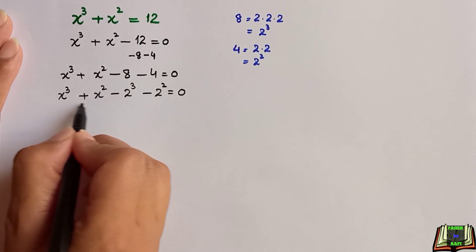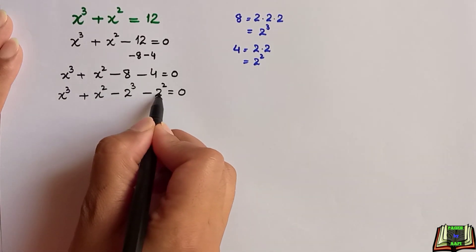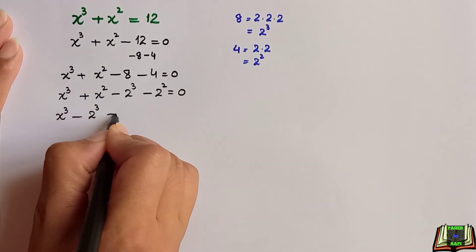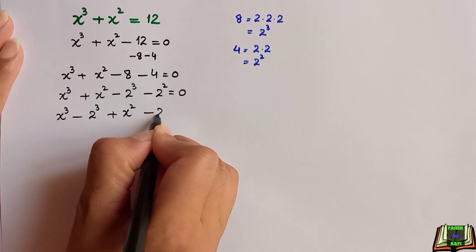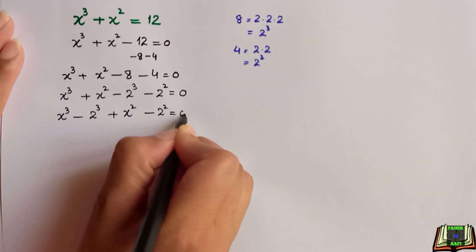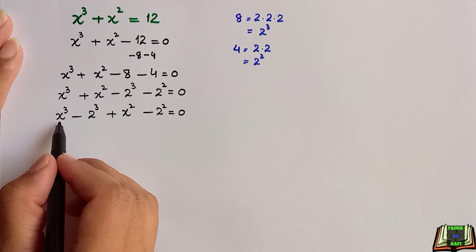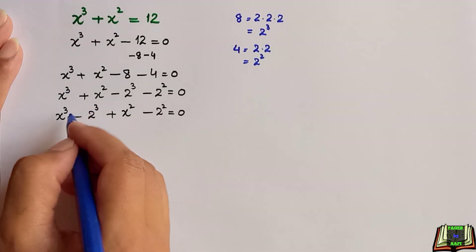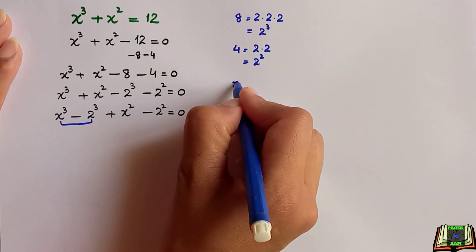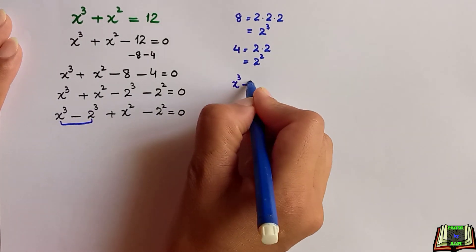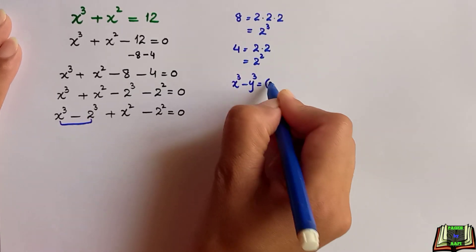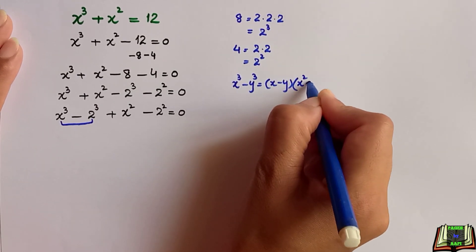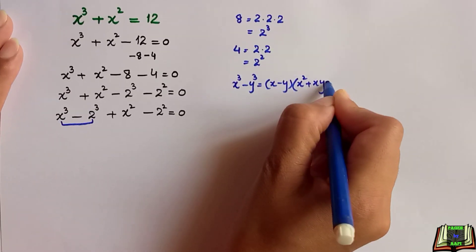Now we will arrange the cube terms and square terms together: x cube minus 2 cube plus x square minus 2 square. Why we have done this? Because we will have to simplify using this formula: x cube minus y cube. This is equal to x minus y times x square plus xy plus y square.